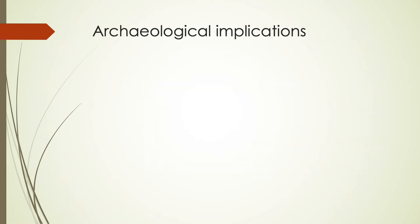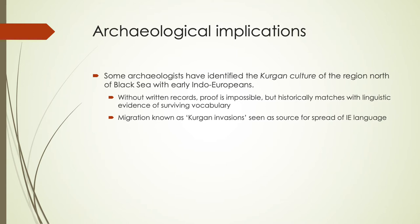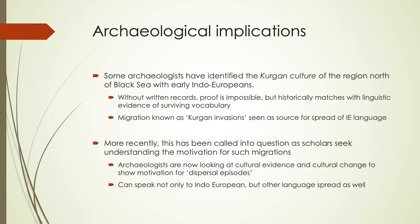Archaeological information has identified what's known as the Kurgan culture of the region north of the Black Sea with early Indo-Europeans. There are no written records or real proof of this, but historically it matches with some of the linguistic evidence and surviving vocabulary. More recently this has been called into question because scholars are trying to understand the motivation for migration — if they were in one area for thousands of years, what motivated them to start spreading? Archaeologists are now looking for cultural changes to show motivation for these dispersal episodes.